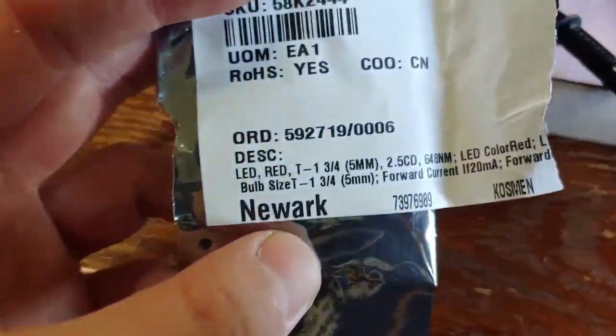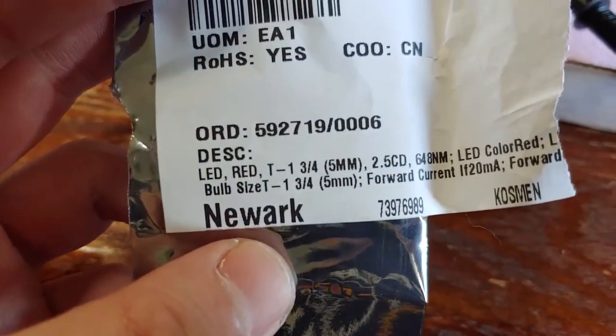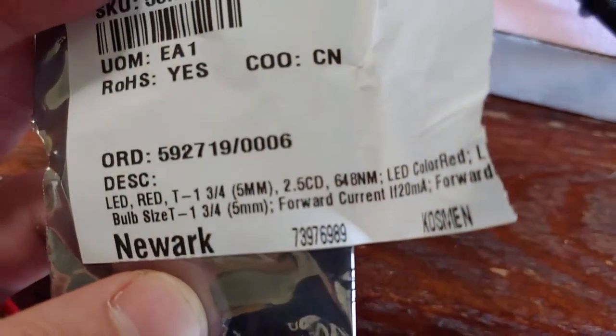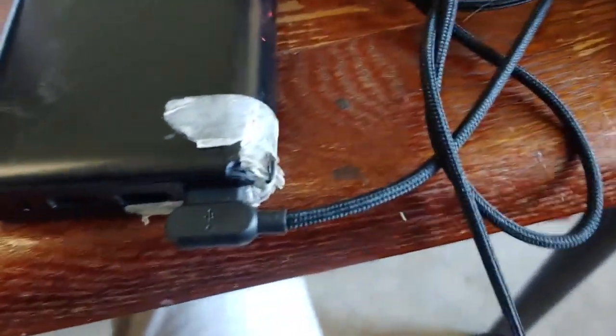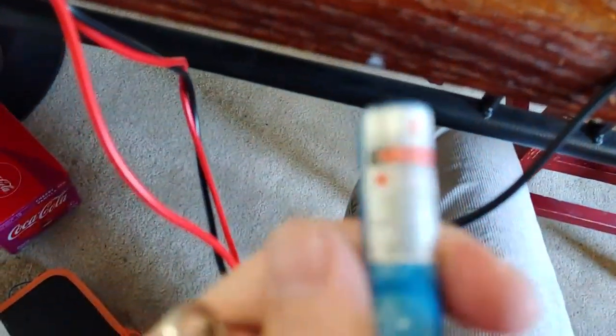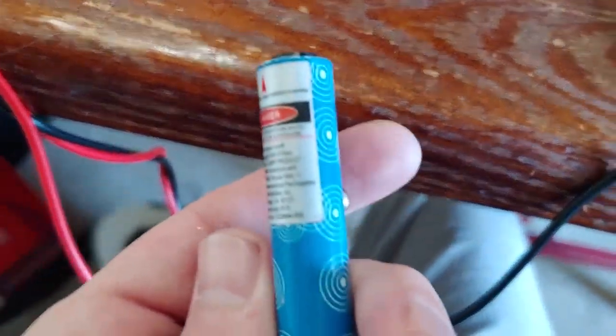This is a red LED with a 648 nanometer wavelength. And this is a red laser pointer that emits - I think it says like 440 to 455 on it, so about 450 nanometers.